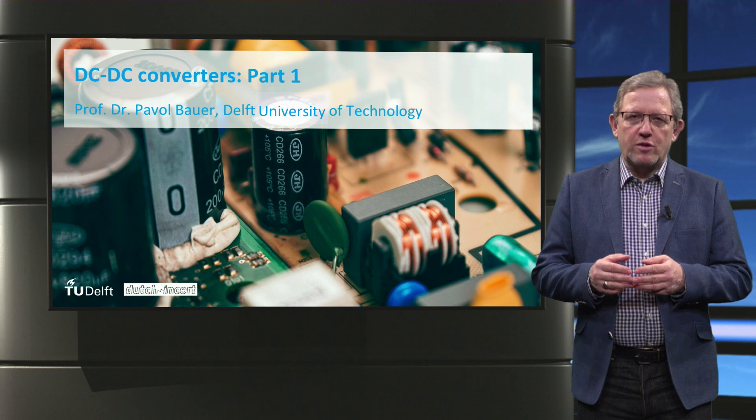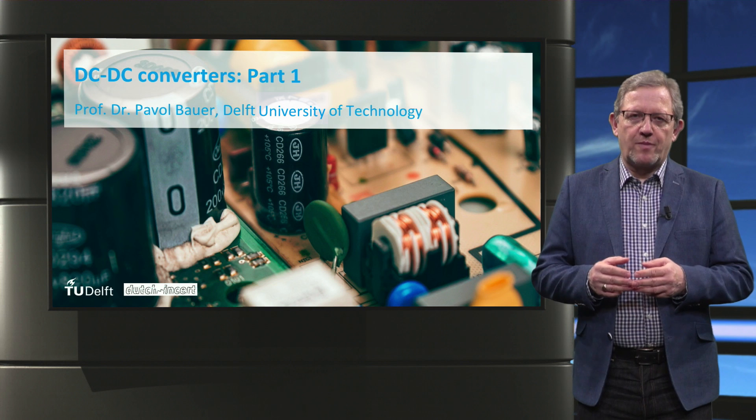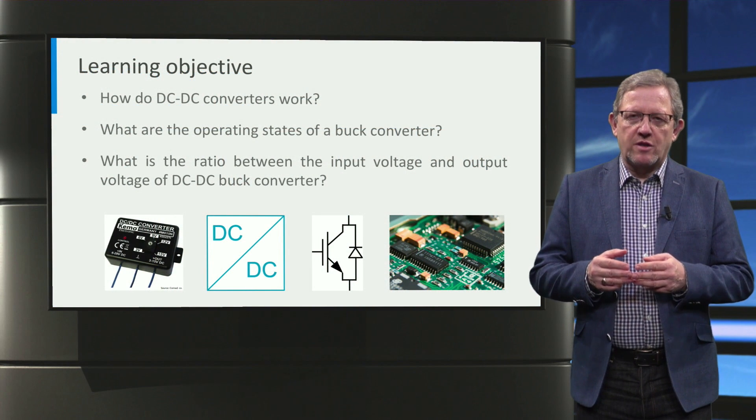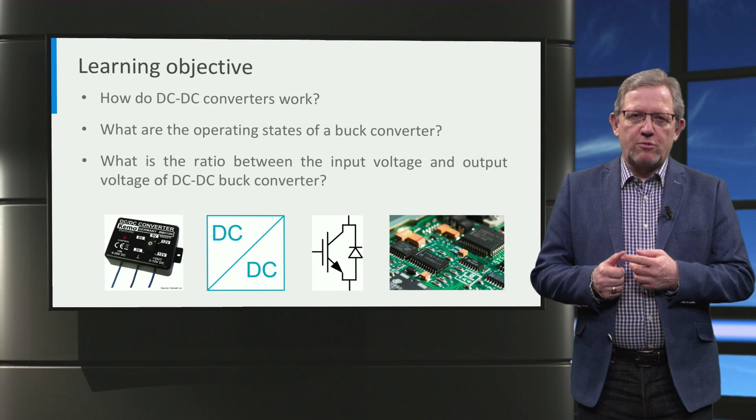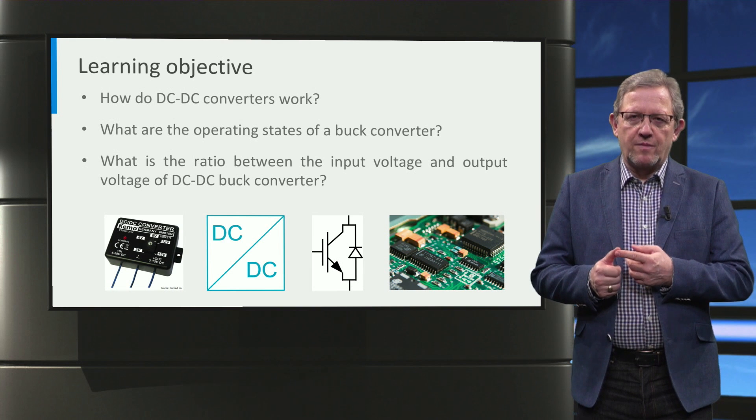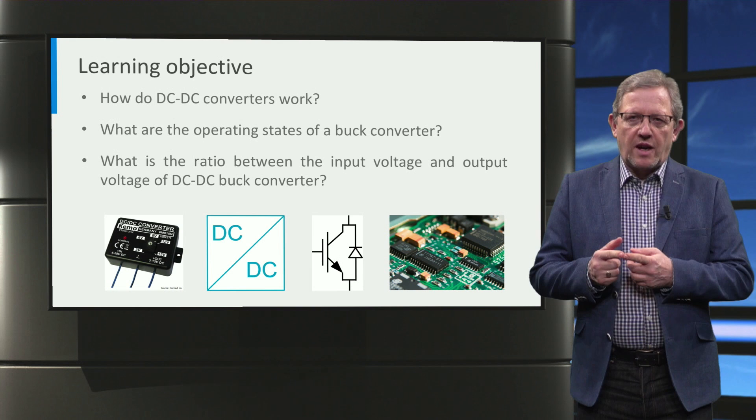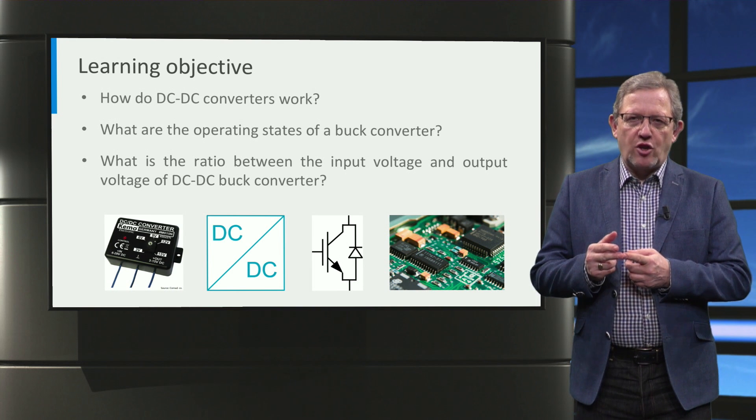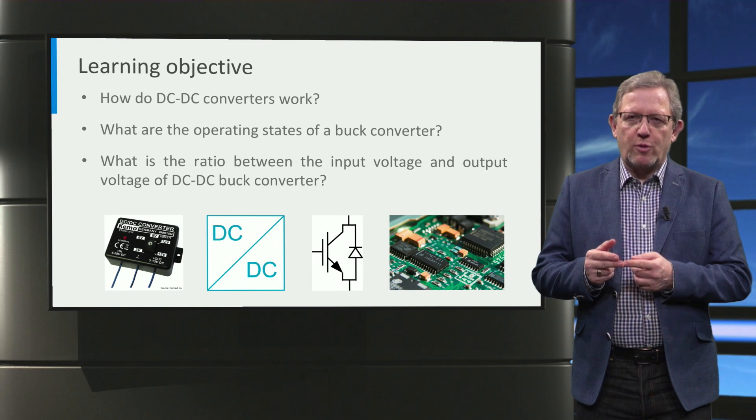In particular, we will focus on the buck or step-down converter. The main learning objectives will fall under three questions. First, how does the DC-to-DC converter work? Second, what are the operating states of a buck converter? Third, what is the ratio between the input voltage and output voltage of a DC-to-DC buck converter?